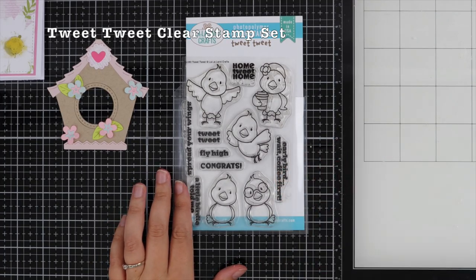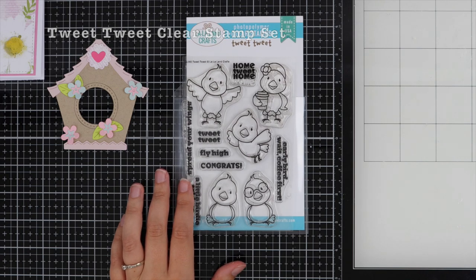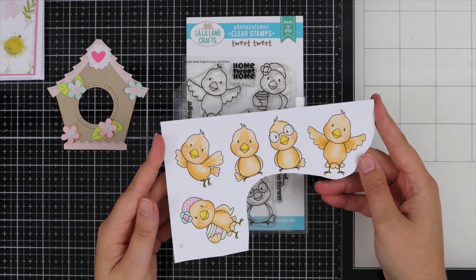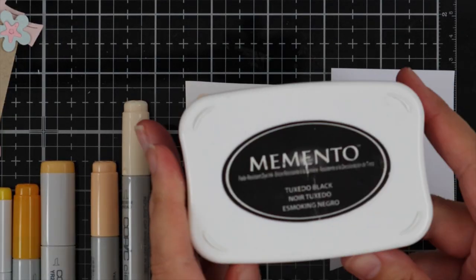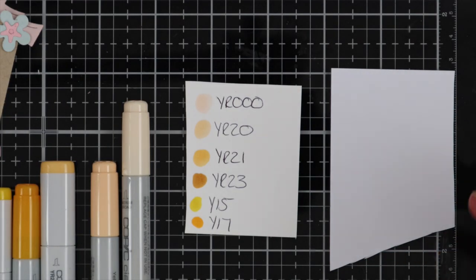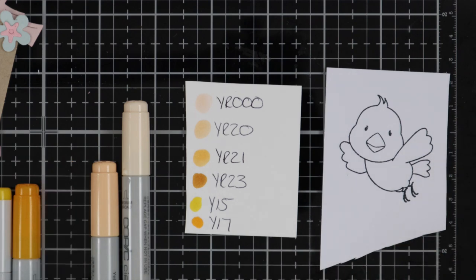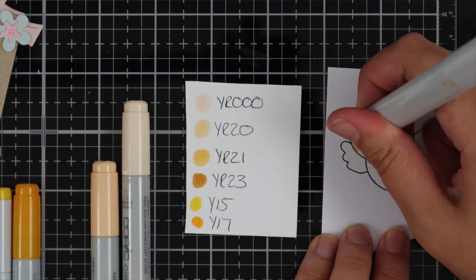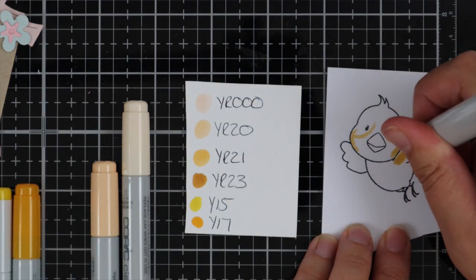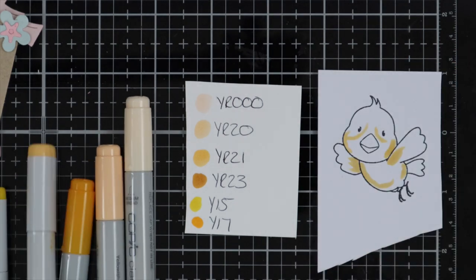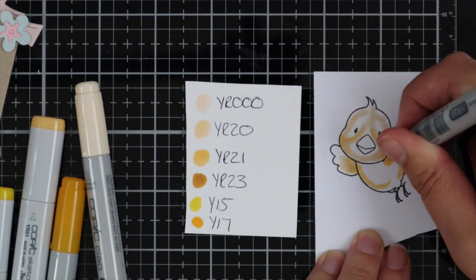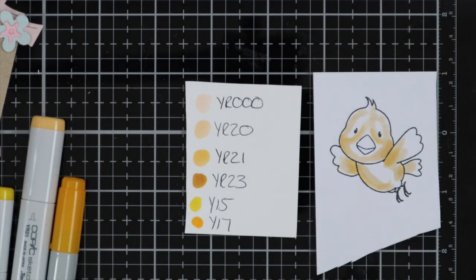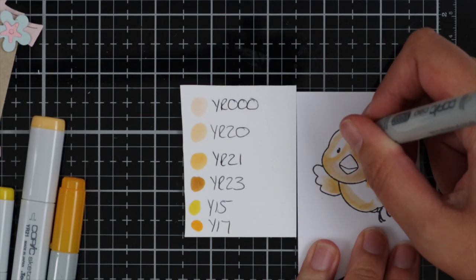For my images, I've used the Tweet Tweet clear stamp set. I love this stamp set, it's so cute. Here are my birds that I've colored in, but I'm quickly showing you just one bird and how I colored it. I've listed all the Copic markers on the side.